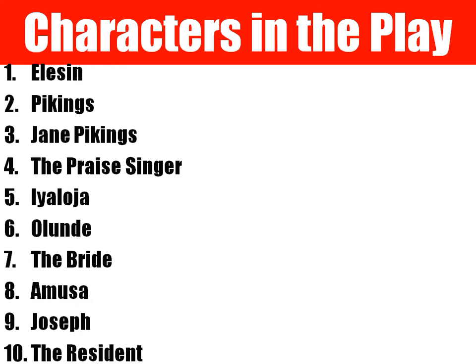The second character is Pilkings. Pilkings is the district officer committed to enforcing English law even if it interferes with local tradition and ritual. We saw that Pilkings tries to express prejudice and intolerance of the Yoruba culture and Nigerians, and is often short and callous with his wife Jane. He and his wife do not regard the tradition and wish everybody would become Christians like them.